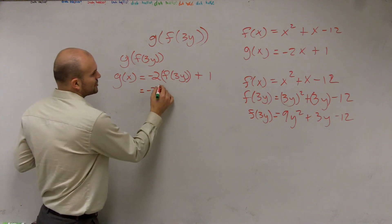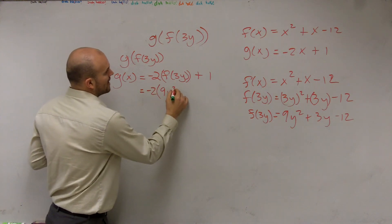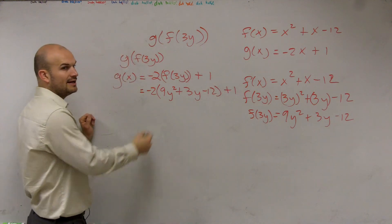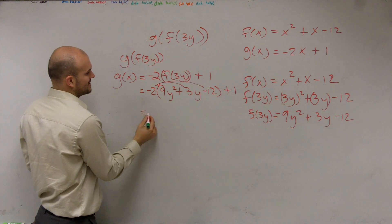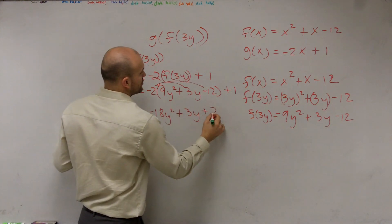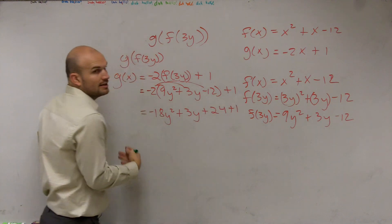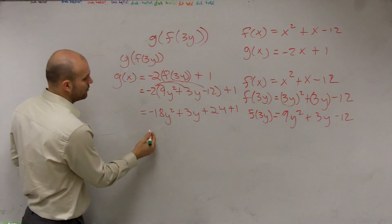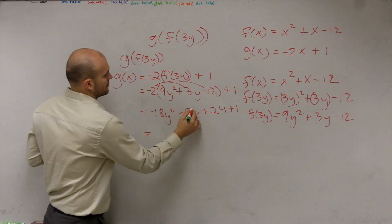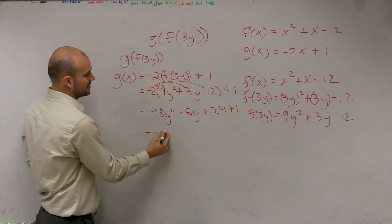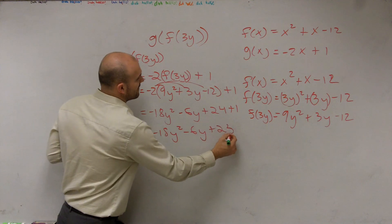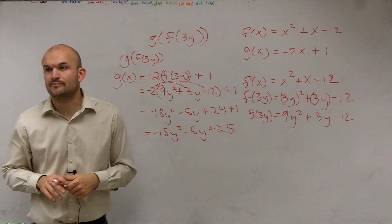So, therefore, we say negative 2 times 9y squared plus 3y minus 12 plus 1. So, then, I distribute the property. So, that's going to equal negative 18y squared plus 3y plus 24 plus 1. Now, I can combine the 24 and the 1. It's minus 6y. Yeah. Sorry. Thank you. Plus 24. Now, I can combine: negative 18y squared minus 6y plus 25. And that would be your final answer.